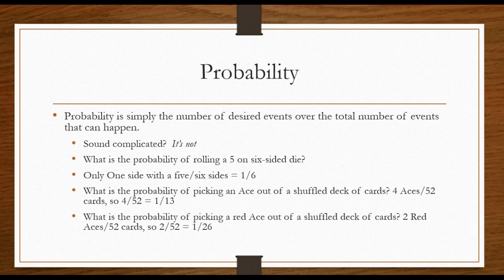What about, what is the probability of picking a red ace? Well, there's two red aces, the ace of hearts and the ace of diamonds, so it would be two out of fifty-two, or one twenty-six. Or what if they said, what is the probability of picking the king of clubs out of a deck of cards? There's only one king of clubs, so it'd be one out of fifty-two.